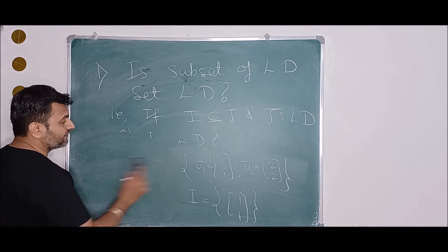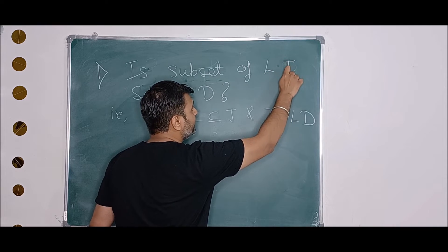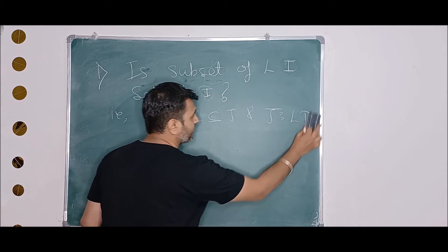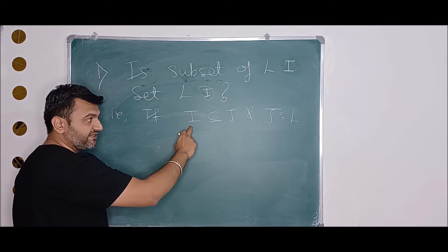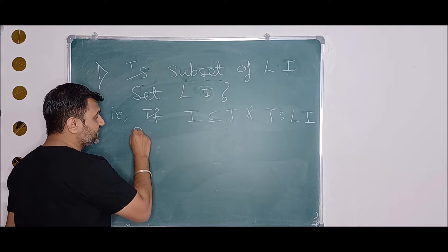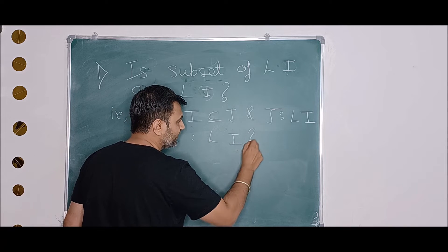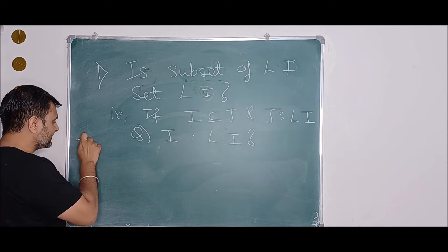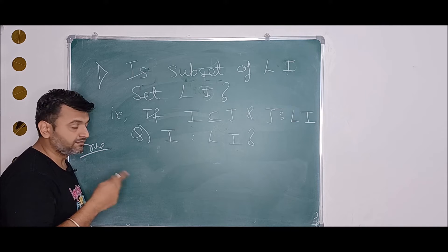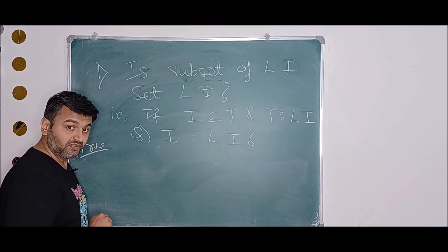The second question is: is a subset of a linearly independent set linearly independent? That is, if I is a subset of J and J is linearly independent, is I also linearly independent? For this, the answer is true. Subsets behave nicely with independence, but not with dependence. We need to prove this.